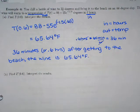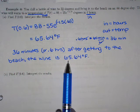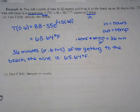After getting to the beach the wine is 65.64 degrees Fahrenheit. So it was 33 degrees. It was nice and cold. And then after 36 minutes of sitting at the beach it was up to 65.64 degrees Fahrenheit. A lot warmer.